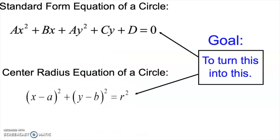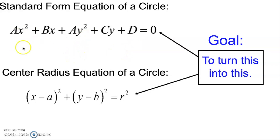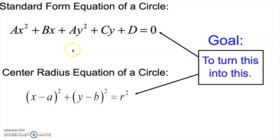At this point, there's one more thing I need to show you: the standard form of the equation of a circle. This equation may look intimidating, but it's just the equation of a circle, where A, B, C, and D are usually integers. Notice that the x squared and y squared terms have the same coefficient — that's how you know it's a circle.